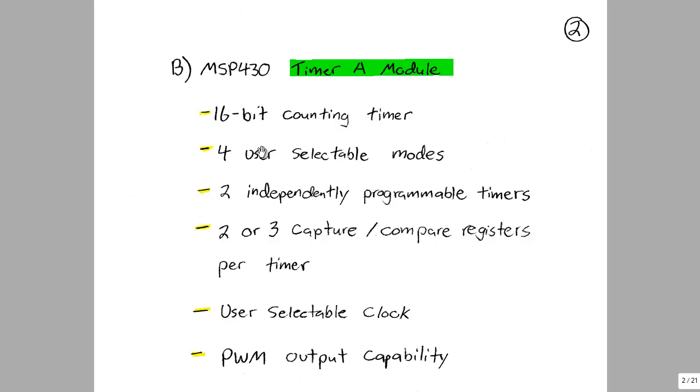There are four user selectable modes that determine the counting pattern. These can either be counting up or counting up and then counting down, or variations on that. There are two independently programmable timers. This is useful if you have different applications where you need multiple timers.